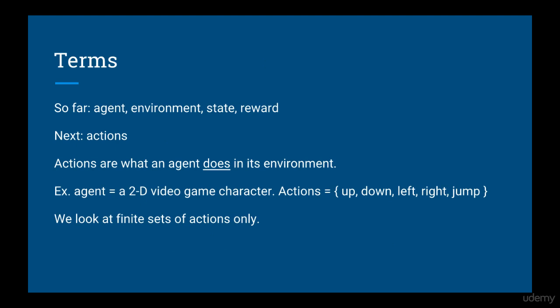The last important concept we need to talk about is actions. Actions are what the agent does in its environment. For example, if you're a 2D video game character, your actions might be up, down, left, right, and jump — this is an example of a finite set of actions. There are also examples of an infinite set of actions, but we won't discuss that in this course unless the course is updated in the future to include them.